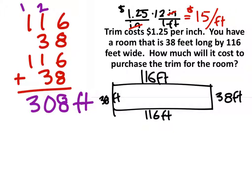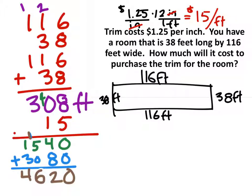So I have the amount of trim that I need. Of course, this doesn't include mistakes that we may make or overlapping that may occur. But I know how much it costs per foot, so I'm just going to take that 308 and multiply it by 15, because it's $15 per foot. And if this was dimensional analysis, it would cancel out the feet. So I've done the work there from the multiplication of 308 times 15, and I get 4,620, and we should label this in dollars. So that's how much it would cost to purchase the trim for this room.